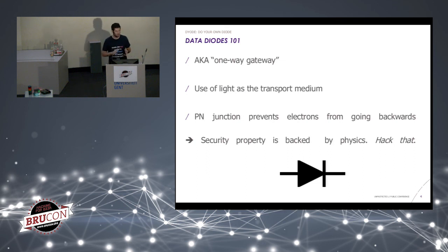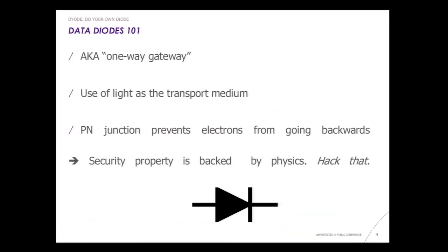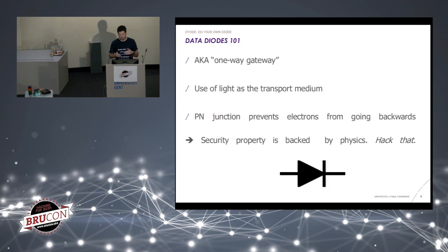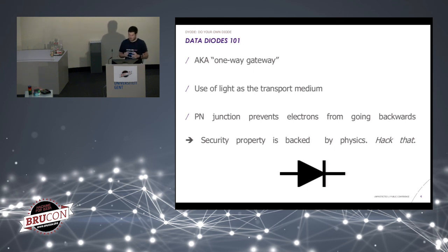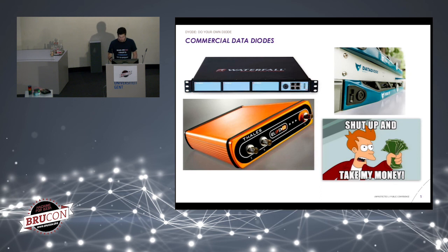Today I'm talking about one solution that in specific cases allows you to secure your ICS: data diodes, sometimes called one-way gateways. The idea is very simple — information goes one way and cannot go backwards. We achieve this by using light as a transport medium, contrary to Ethernet which uses copper cable. We use low-level physical properties of optical components to ensure information only flows one way. For example, in light-emitting diodes or photodiodes, a PN junction prevents electrons from going backwards. The security is backed by physics.